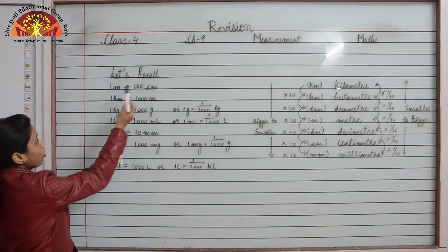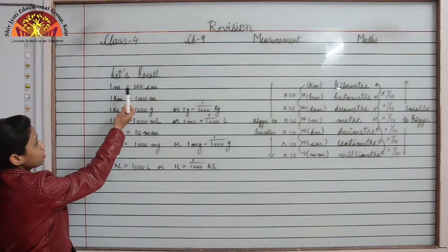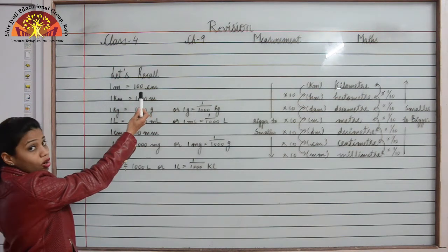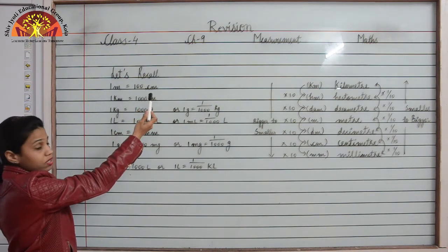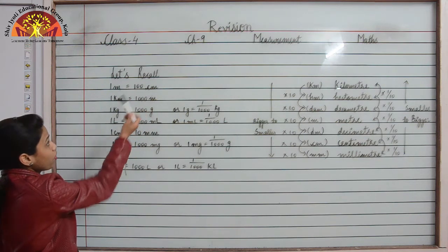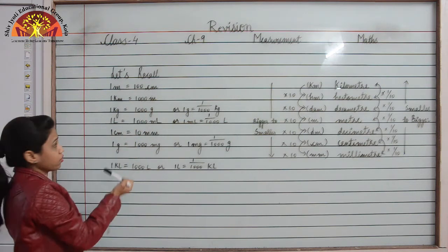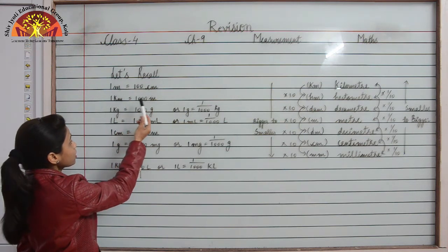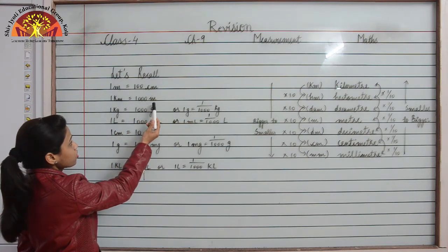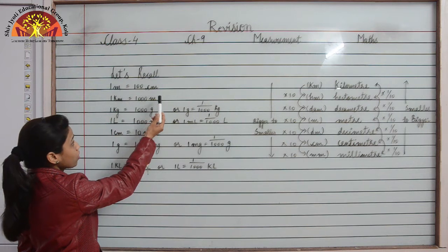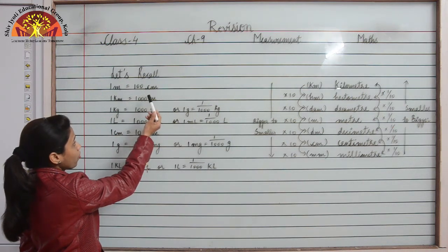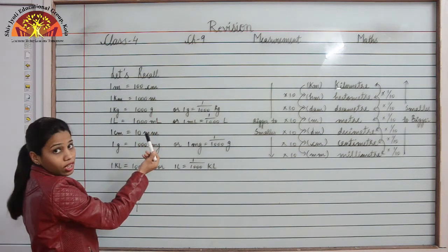1 meter is equal to 100 centimeter, or 1 centimeter is equal to 1 upon 100 meter. Similarly, 1 kilometer is equal to 1000 meter, or 1 meter is equal to 1 upon 1000 kilometer.